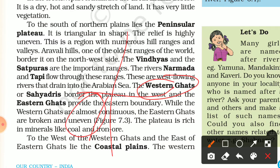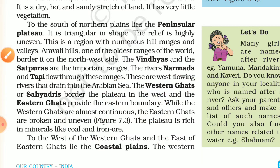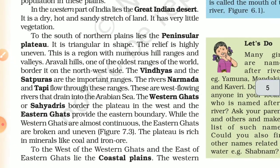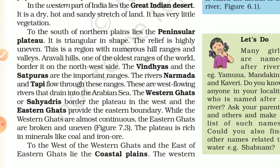The Western Ghats, or Sayadri, border the plateau in the west, while the Eastern Ghats provide the eastern boundary. The Western Ghats are almost continuous, whereas the Eastern Ghats are broken and uneven.